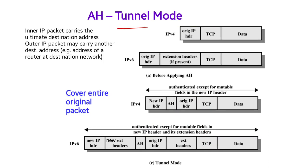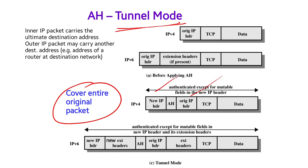In tunnel mode, the AH covers the entire original packet. The inner IP packet carries the ultimate destination address, while the outer IP packet may carry a different destination address — representing new IP and original IP. After applying the authentication header in tunnel mode, the structure is somewhat similar to transport mode but the entire original packet is encapsulated.